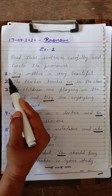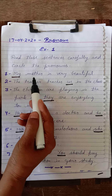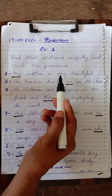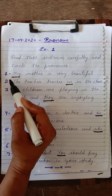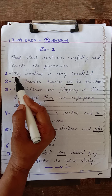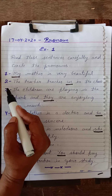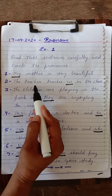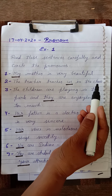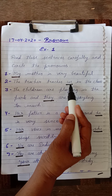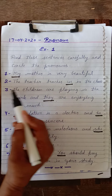Number one: 'My mother is very beautiful.' In this sentence, 'my' is a pronoun. Number two: 'The teacher teaches us in the class.' 'Us' is a pronoun.